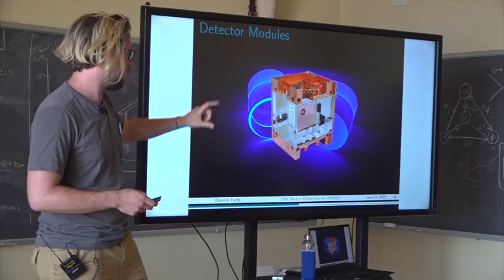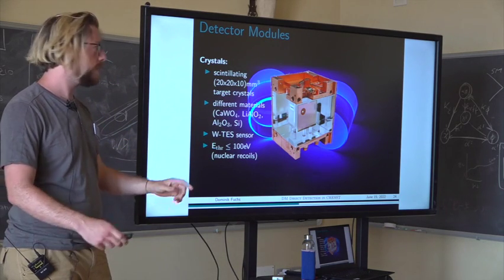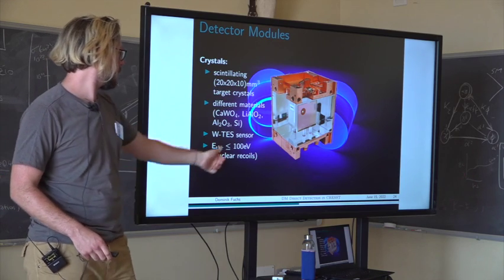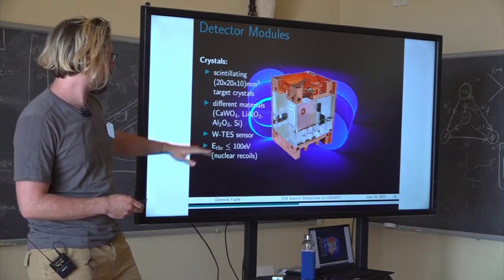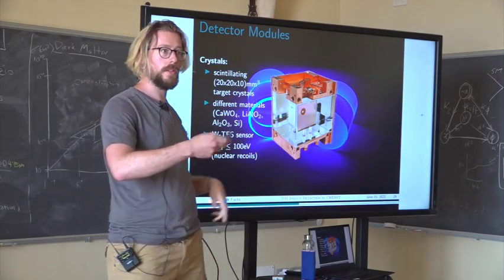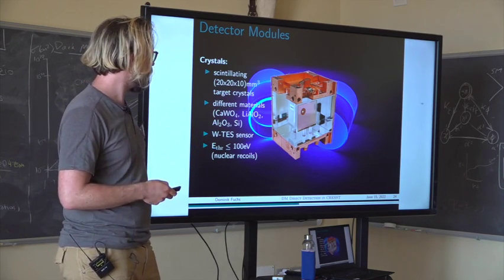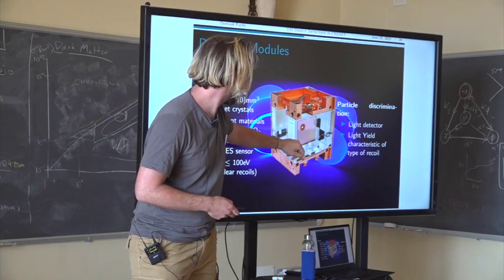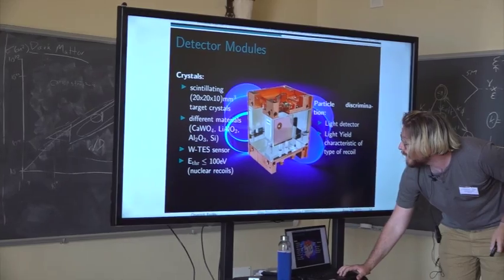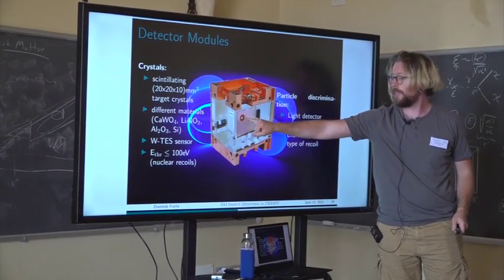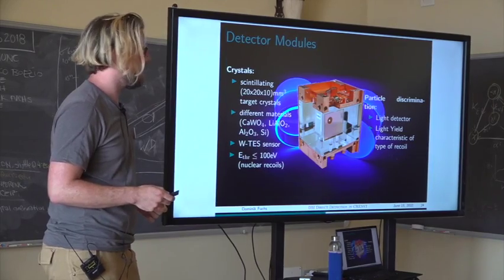We use different geometries in CRESST, but the most standard module has a main crystal roughly two by two by one centimeter in size. We mostly use scintillating materials: calcium tungstate, barium aluminate, sapphire, and silicon. These crystals are all equipped with a tungsten transition edge sensor, giving us sensitivities to nuclear recoil energies below 100 eV. We also catch the scintillation light using a light detector disc also equipped with a transition edge sensor, which we use for discrimination between different recoil event types.